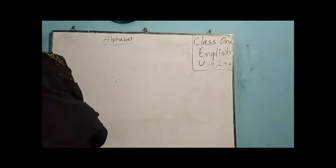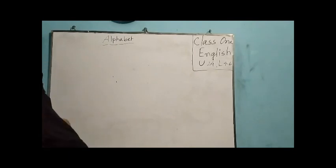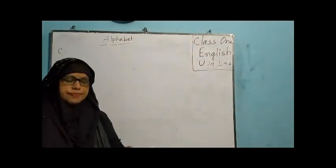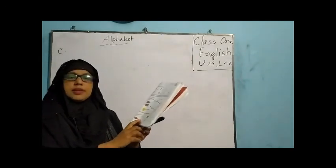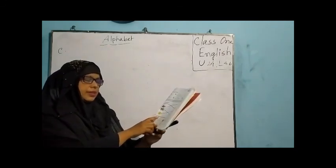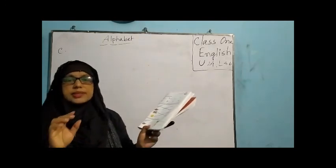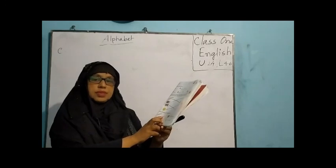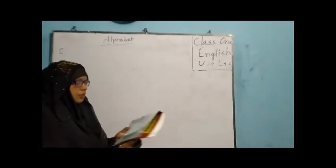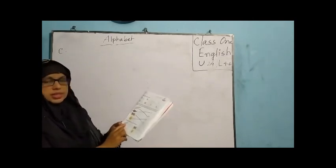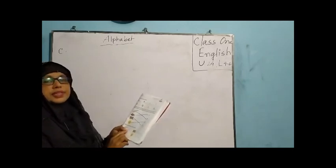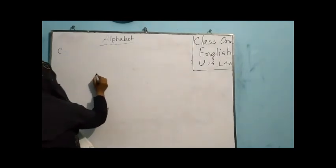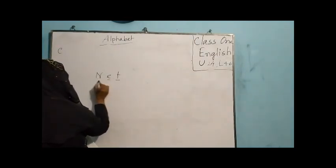Now Section C. Work with Section C. Look at the activities of Section C. Here you are asked to write the letters to make words. You have to look at the pictures and write the names of the words. You have to make words.